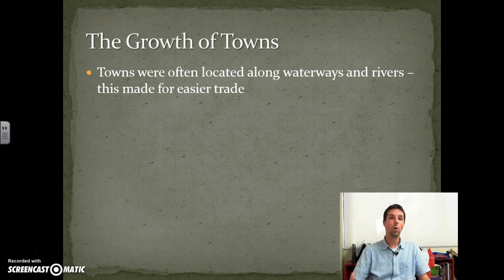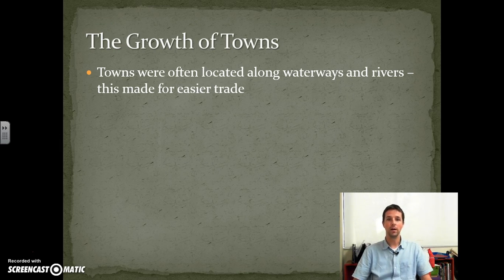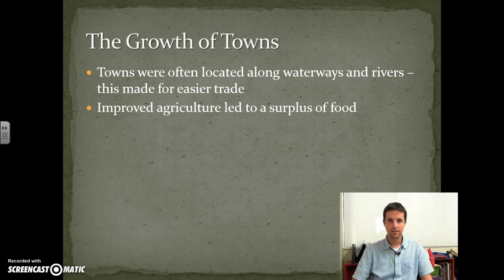Towns almost always in medieval Europe grew up along waterways, rivers, and coastal areas. The reason is that water makes trade a lot easier — the transport of goods is made easier by the buoyancy of water, meaning you can pack a whole lot of goods onto a boat and ship them much more easily than packing them on a wagon or carrying them by animal power.